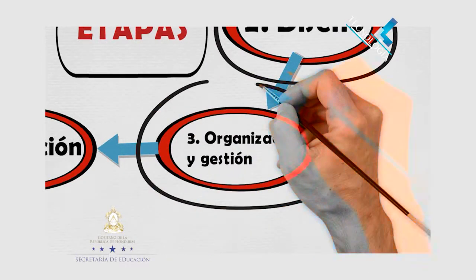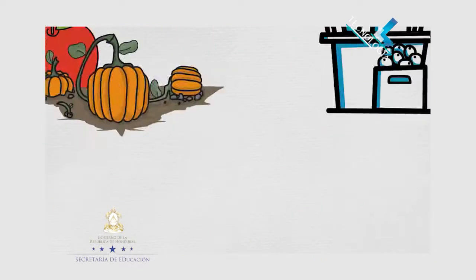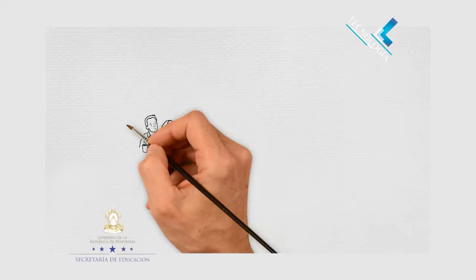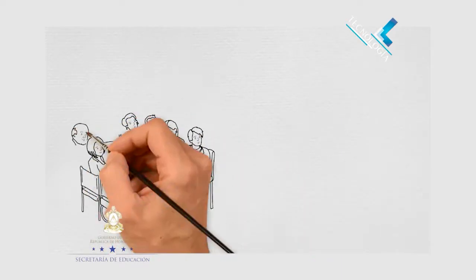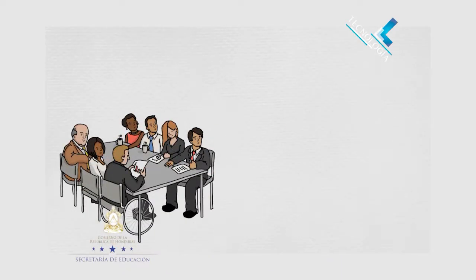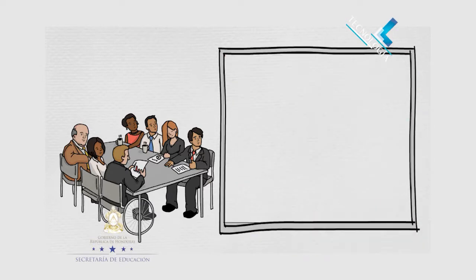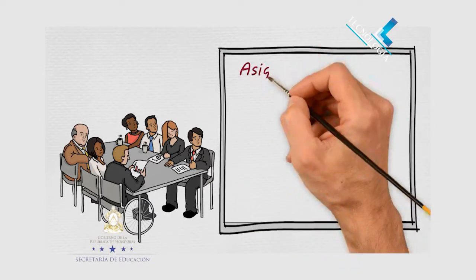La organización y gestión. En este paso, se debe distribuir las tareas a realizar. Quienes están a cargo de las compras, quién hará la mermelada, quién hará las gestiones de ventas y quiénes las distribuirán, entre otras tareas.